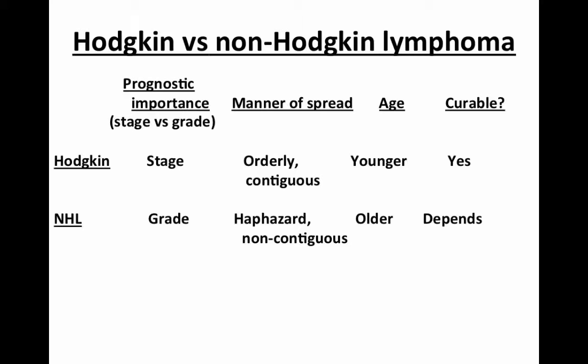For Hodgkin versus non-Hodgkin lymphoma, the stage drives the prognosis for Hodgkin lymphoma, whereas for non-Hodgkin lymphoma, the grade is really important. Grade simply means what it looks like under the microscope — the subtype that the pathologist identifies.